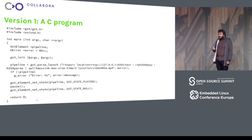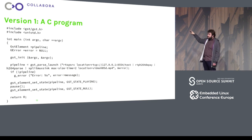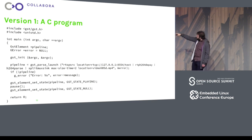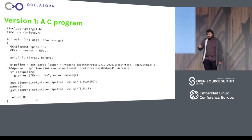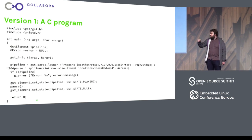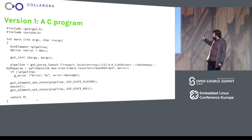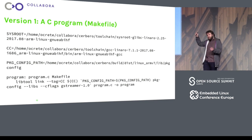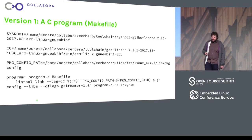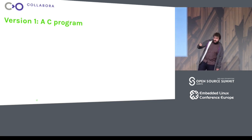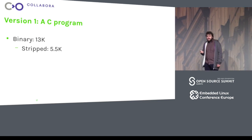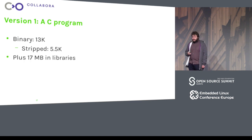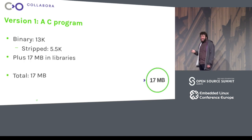The next step was to take the command line and make it into a C program. This C program is exactly equivalent to the command line — you just use the parse-launch line, set the max-size-time so that at every keyframe it creates a file, check if it's a valid pipeline, set the state to playing, and wait for a signal. The most simple GStreamer application you can make, built with a cross-compile makefile setting the sysroot, CC, and pkg-config path. The application compiled to 13k, stripped to 5.5k — pretty small. But plus 17 megs of libraries. Still at 17 megs.